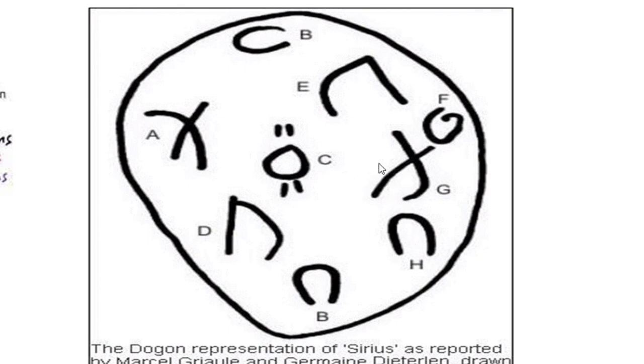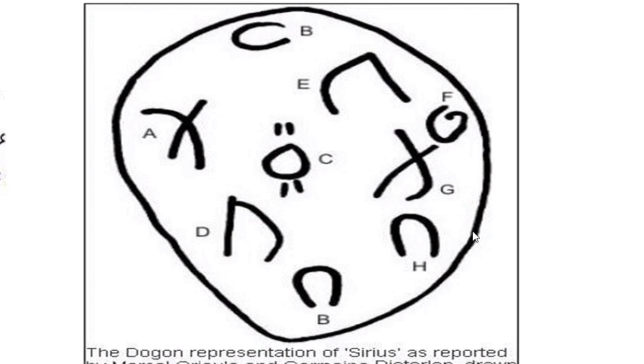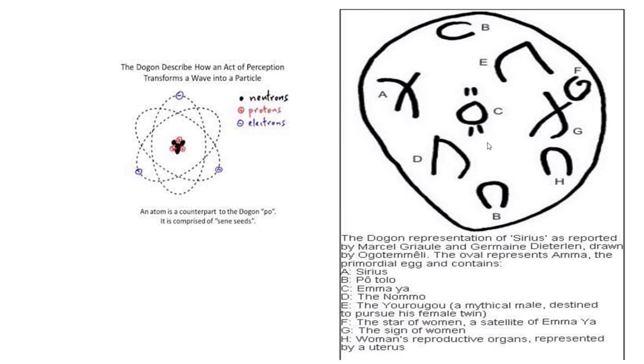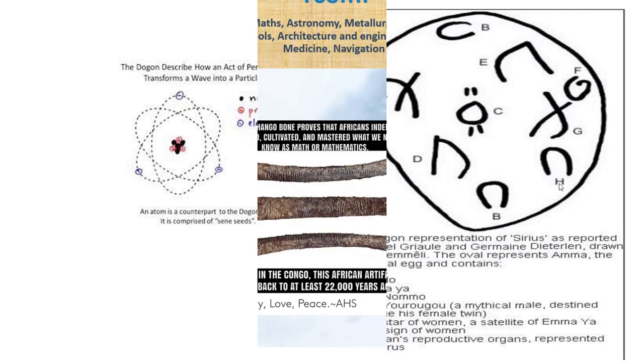The Dogon's representation of the Sirius Star is reported by Marcel Griaule and Germaine Dieterlen, drawn by Ogotemmêli. The oval shape represents the Amma, the primordial egg that contains Sirius A, the Po, B, Emma Ya, the Nommo, the Yurugu mythical male destined to pursue his female twin. The star of women, a satellite of Emma Ya, the sign of women, which is your chromosome, women's reproductive organs by the uterus.